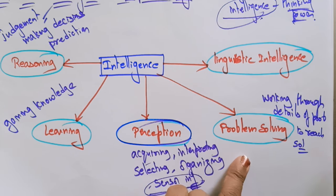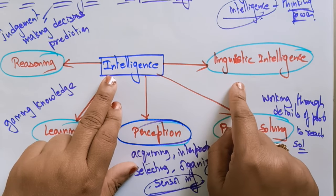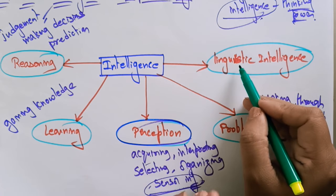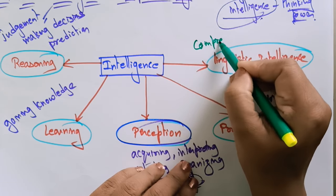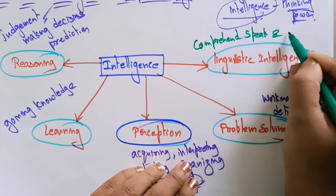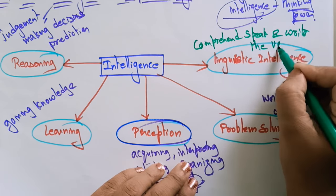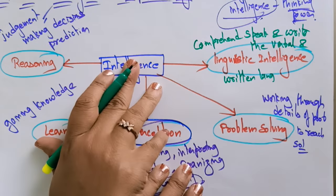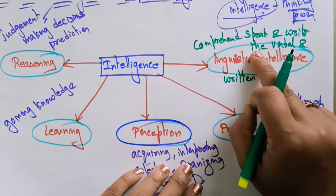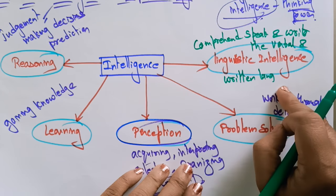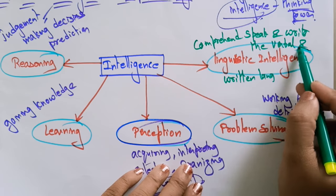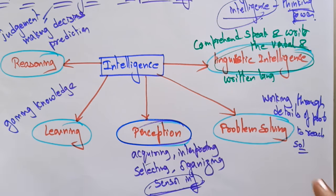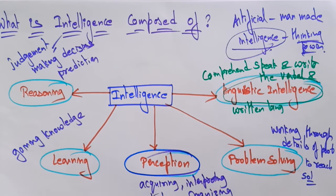The final component is linguistic intelligence. Linguistic intelligence is one's ability to comprehend, speak, and write verbal and written language. So the intelligence is composed of the ability to comprehend, speak, and write verbal and written language. It is important in interpersonal communication.